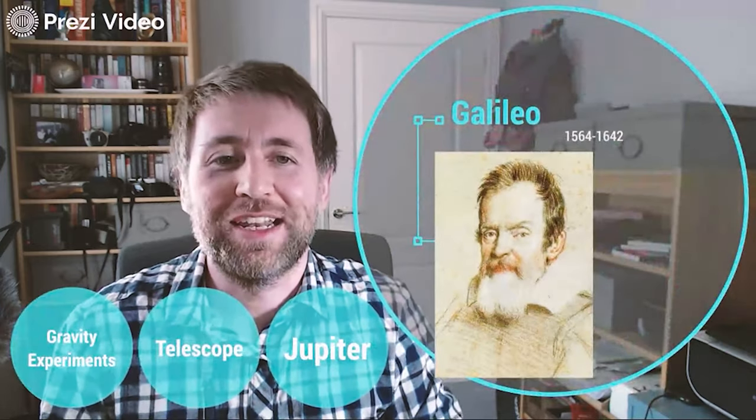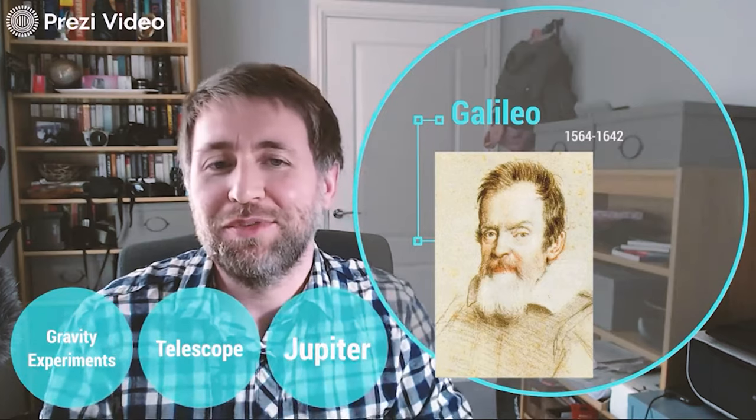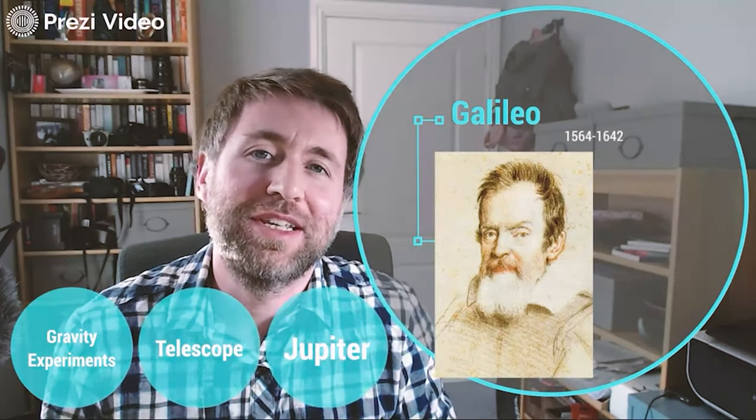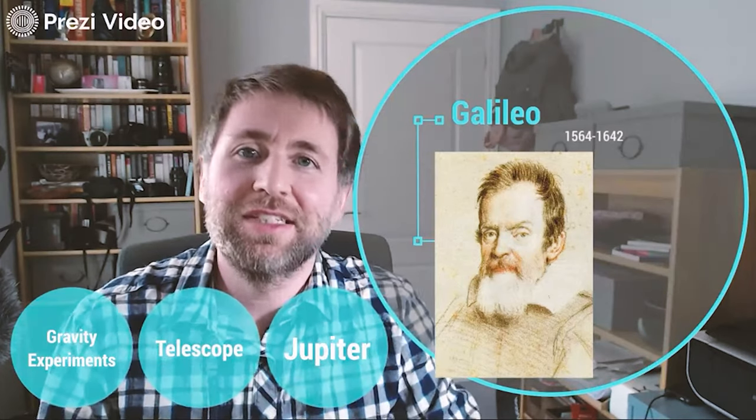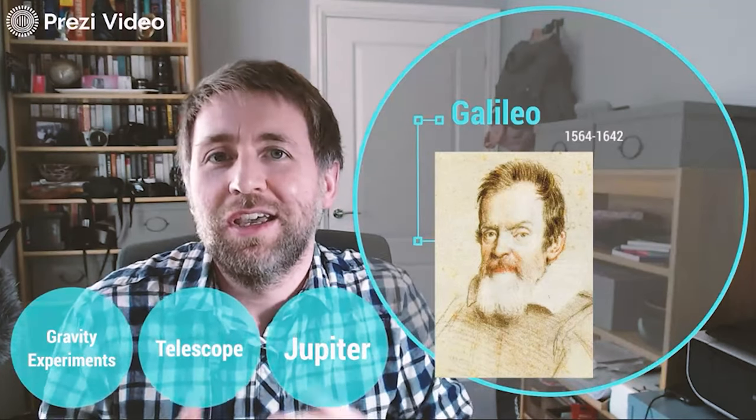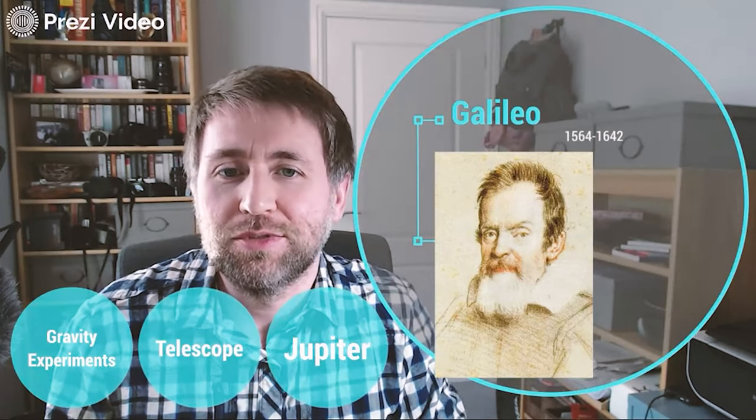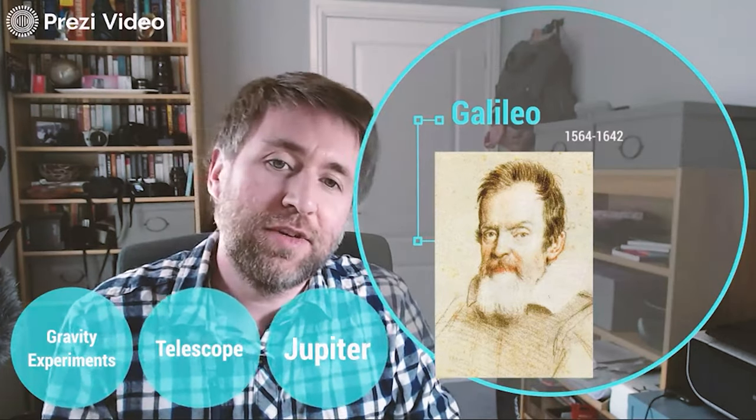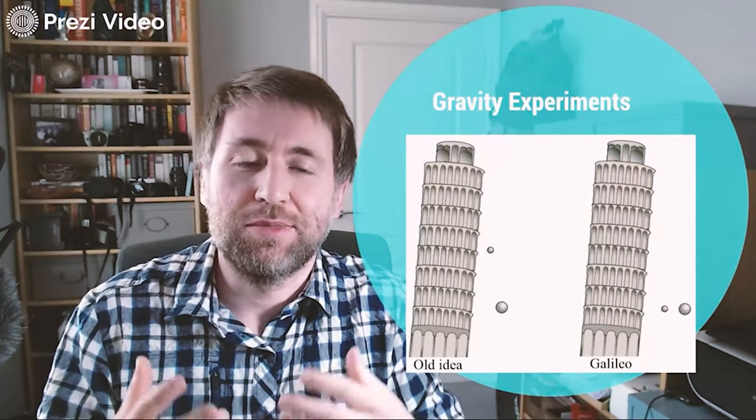It all starts with Galileo. That's when really our exploration of space becomes quite scientific. Before that we did know very accurately the kind of paths and patterns and we could predict them quite far into the future. But Galileo was really the first one to treat it like a physicist. The first thing about Galileo and his most famous and important thing is his treatment of gravity.